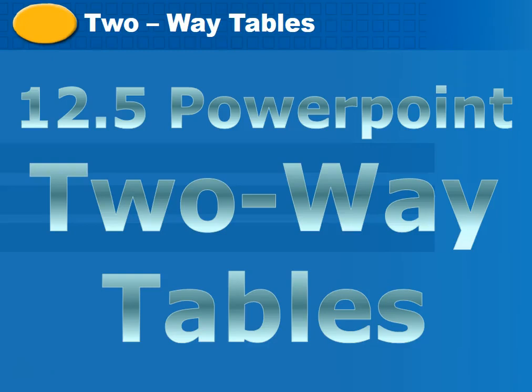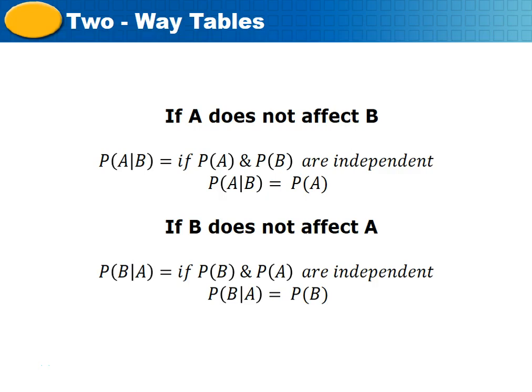This is the 12-5 lesson about two-way tables. I want to remind you all: if A does not affect B, then the probability of A given that B occurs equals the probability of A — that's what it means for A and B to be independent. Similarly, if B does not affect A, then the probability of B given that A occurs is just the probability of B.